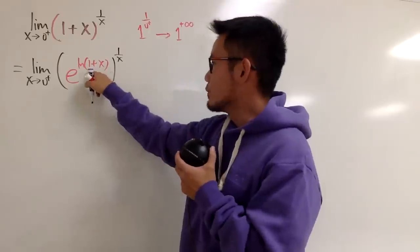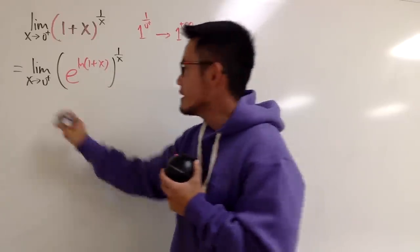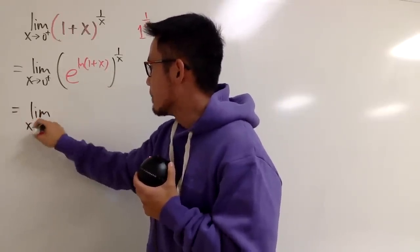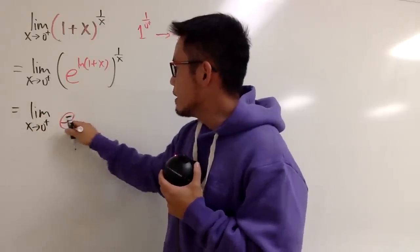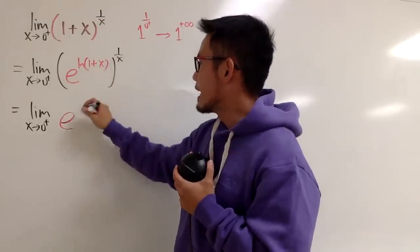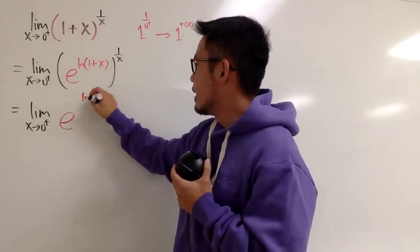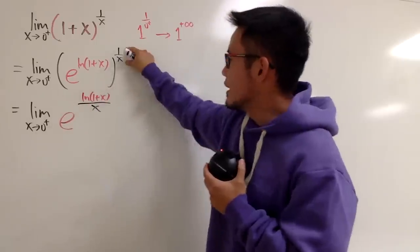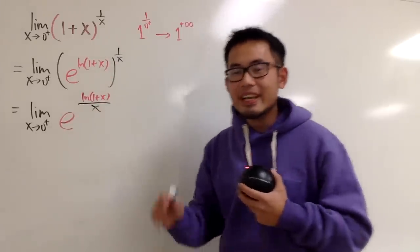Now, of course, we can just multiply the powers, right? So this is the same as saying the limit as x approaching to 0 plus, and e for the base still, and we multiply this and that. So we have just ln of (1+x) over x, right? 1 over x times that is just that.